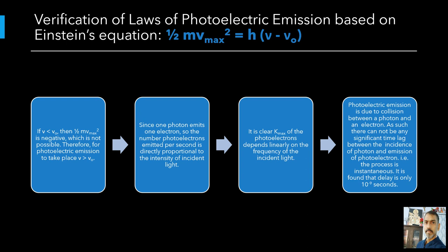In Einstein's picture, the basic elementary process involved in photoelectric effect is the absorption of a light quantum by an electron. This process is instantaneous. Thus, whatever may be the intensity, that is the number of quanta of radiation per unit area per unit time, photoelectric emission is instantaneous. Low intensity does not mean delay in emission, since the basic elementary process is the same. Intensity only determines how many electrons are able to participate in the elementary process, that is absorption of a light quantum by a single electron, and therefore the photoelectric current.